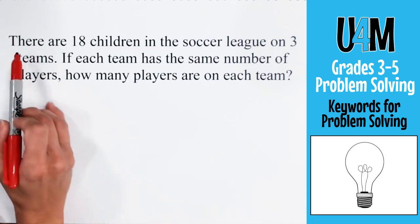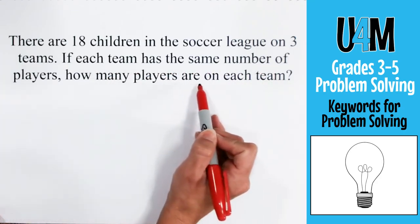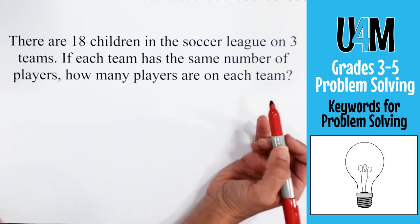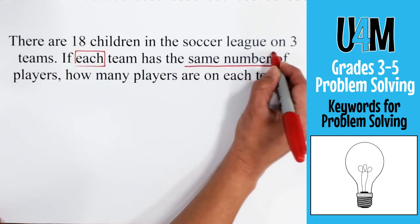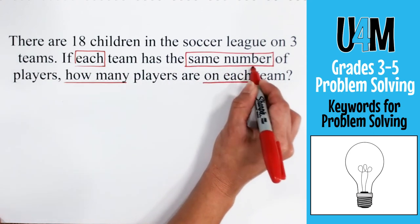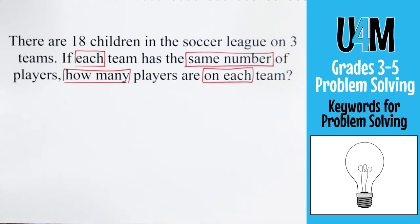So let's take a look at a division problem where we can find some of these keywords. In this problem there are 18 children in the soccer league on three teams. If each team has the same number of players, how many players are on each team? The word 'each' appears a lot and is used in both multiplication and division, but here we're looking at each team having the same number — breaking up equally — so this problem has several key terms pointing directly to division.